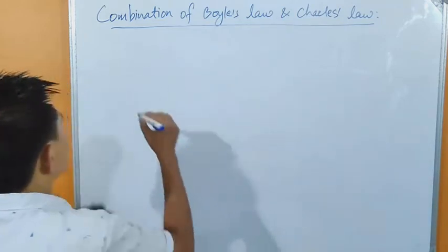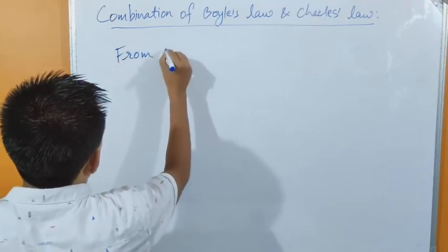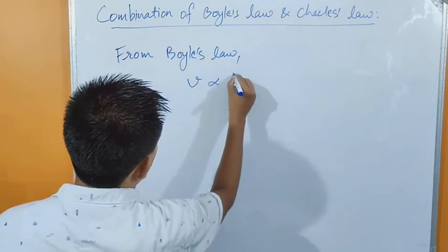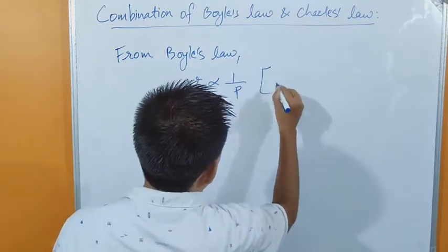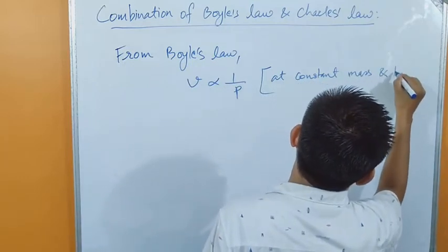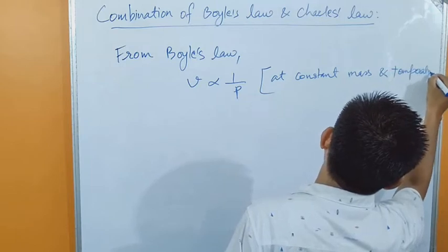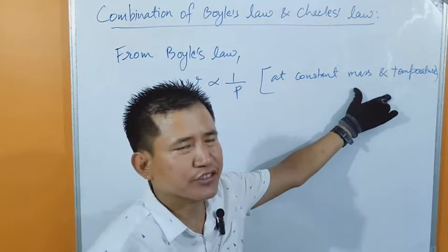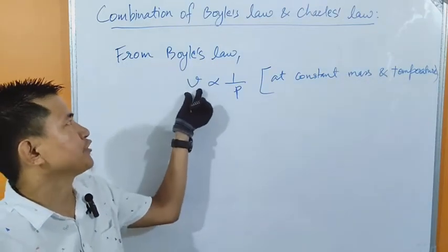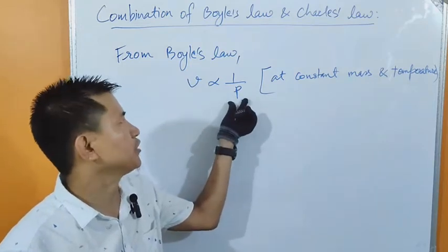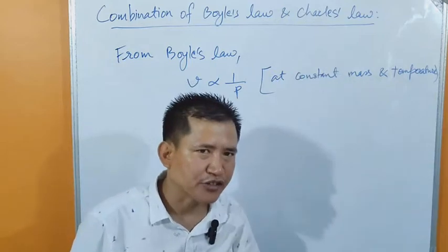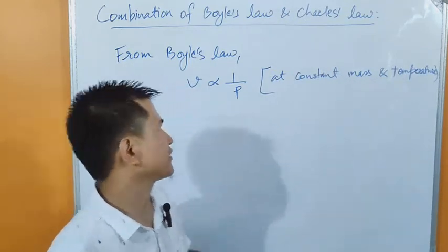Let's begin. From Boyle's Law, we have volume of gas is inversely proportional to pressure of gas at constant mass and temperature. Mass and temperature are kept constant in Boyle's Law — we must remember this. When mass and temperature are kept constant, if we increase the pressure, volume of gas decreases, and if we decrease the pressure, volume of gas increases. This is what Boyle's Law says.